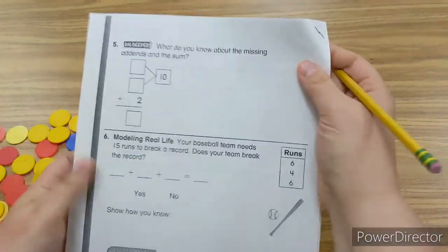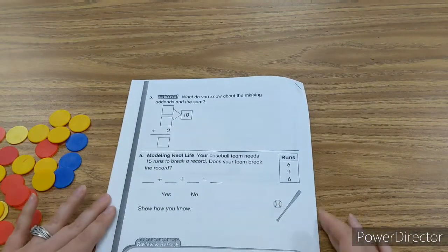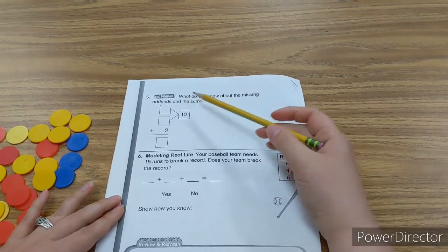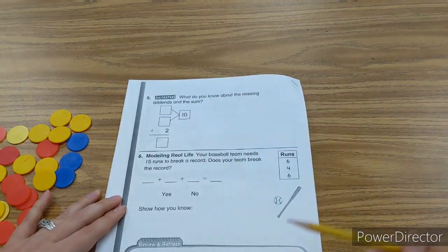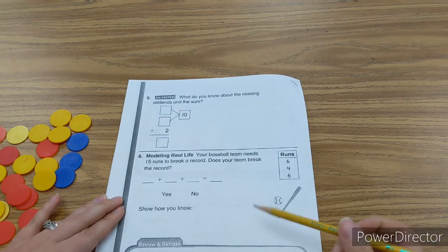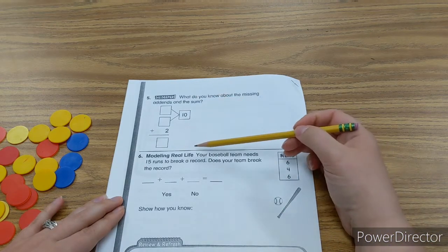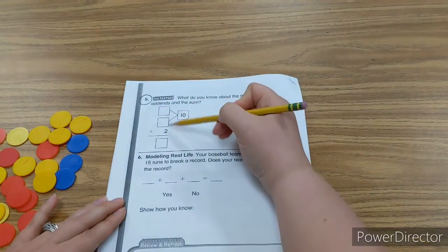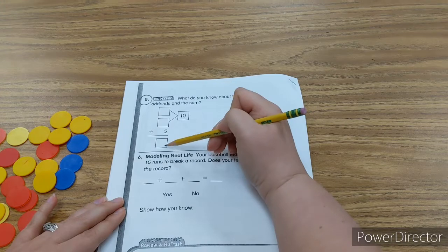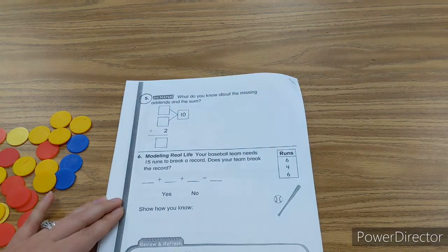And here's our last page. What do you know about the missing addends and the sum? I did this with you. This is almost the exact same problem. So I want you to do this one all on your own. I want you to pick 2 addends that equal 10 and tell me the sum.